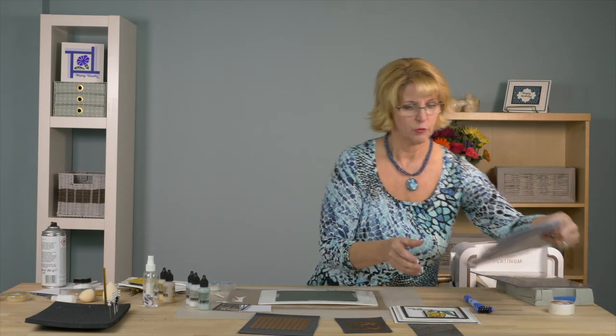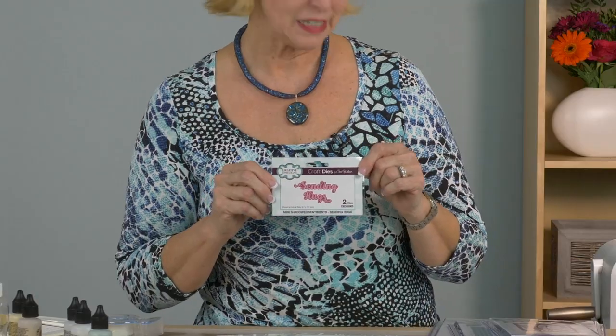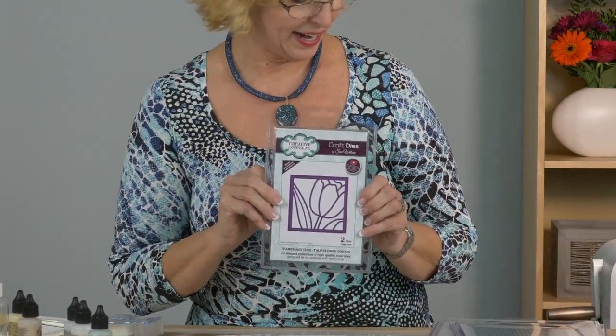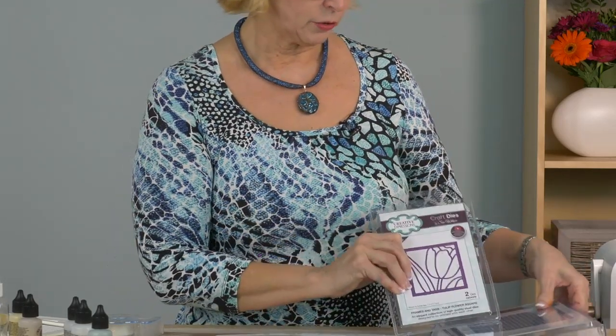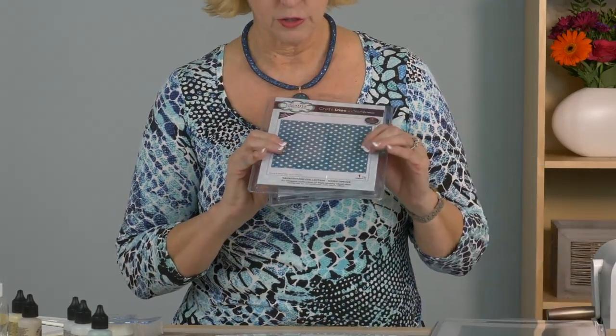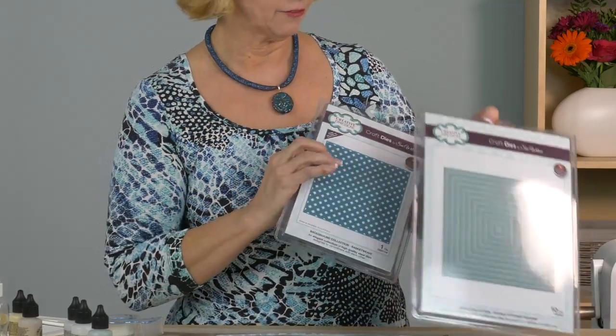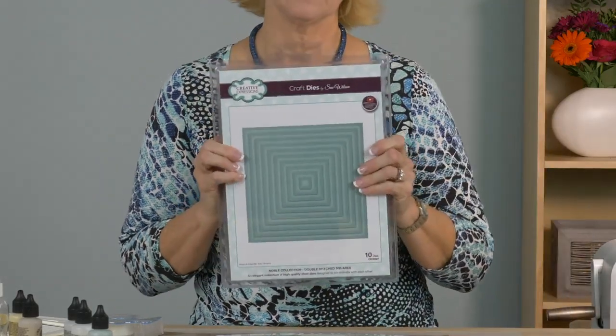We're also going to be using our sending hugs sentiment, which is part of our shadowed mini sentiments. Here is the tulip flower square out of the frames and tags. We're going to create a pretty background using the basket weave, and I've done a multi-layered frame out of the double stitch squares.